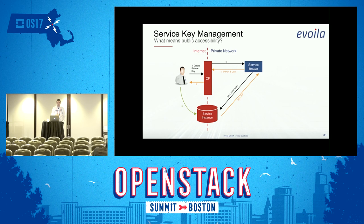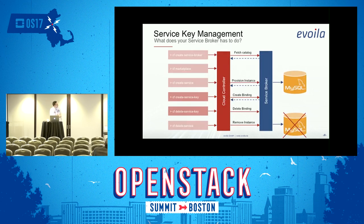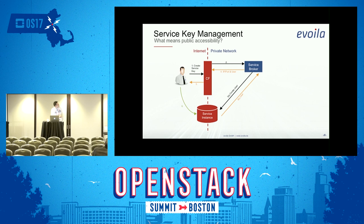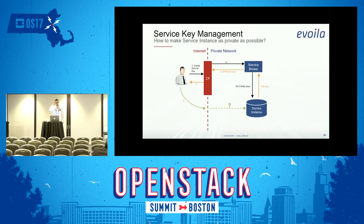Bob isn't in that private network. So if Bob wants direct access to the service instance, it has to be internet-accessible, which isn't ideal. What you really want is the service instance encapsulated in your private network, the service broker in the private network — no one can access both from the internet. Bob only has some interaction with it, but somehow he has to access the database — and that's when we got this solution.